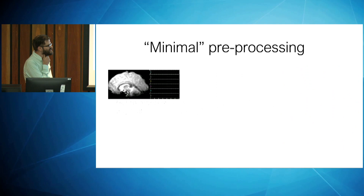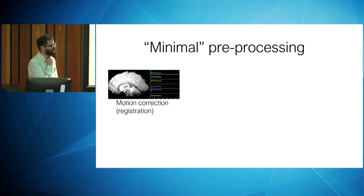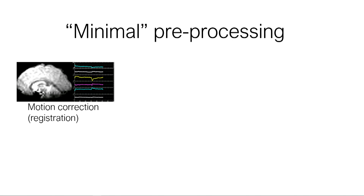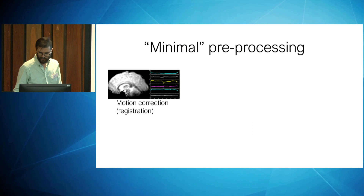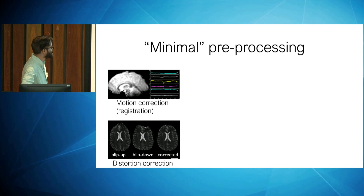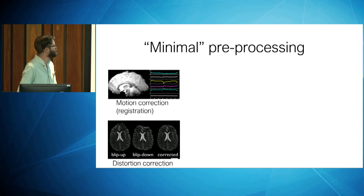The typical first thing people think of is motion correction, otherwise known as realignment or registration. In an EPI slice, you can see someone moving, and the traces show three movement parameters evolving over time. Another step under minimal pre-processing is distortion correction — part of the brain is missing or distorted due to inhomogeneities of the magnetic field. There are clearly defined physical models to correct for this, which is why it stays under minimal pre-processing.